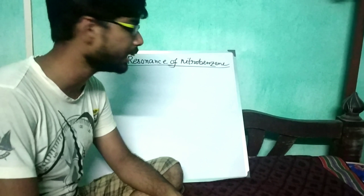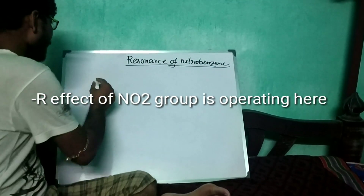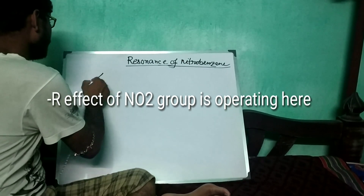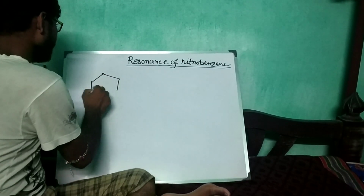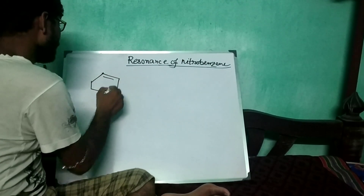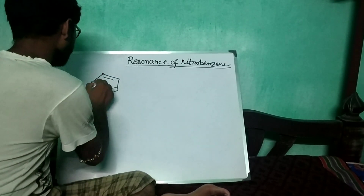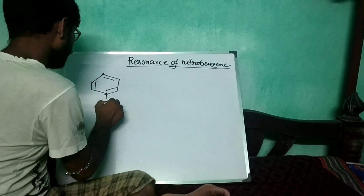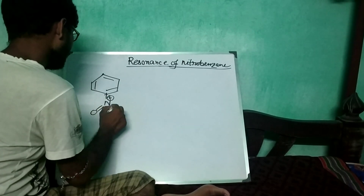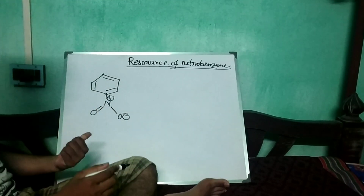First of all I have to draw the original structure of nitrobenzene. I am drawing the structure like N-plus double bond O, and here that is O-minus. That is the structure of nitrobenzene.